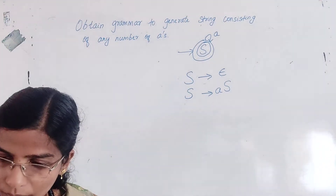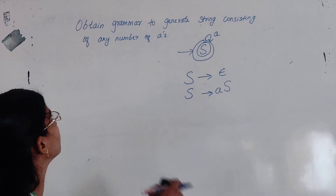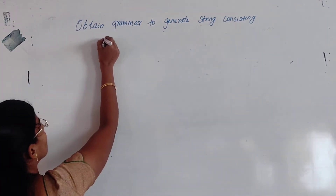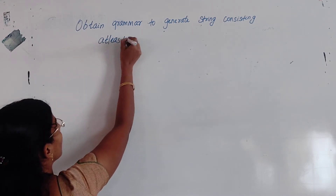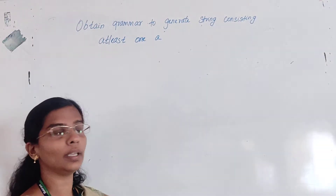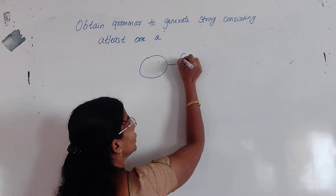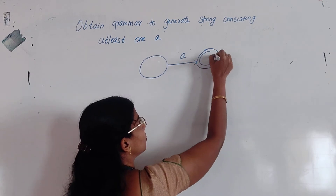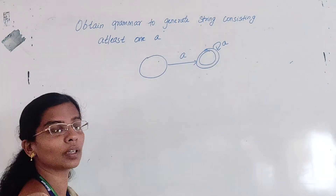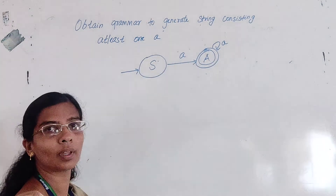We will discuss one more example. String consisting of at least one A. At least one A means the minimum requirement is one A. This will be my final state, and after that I can have any number of A's.